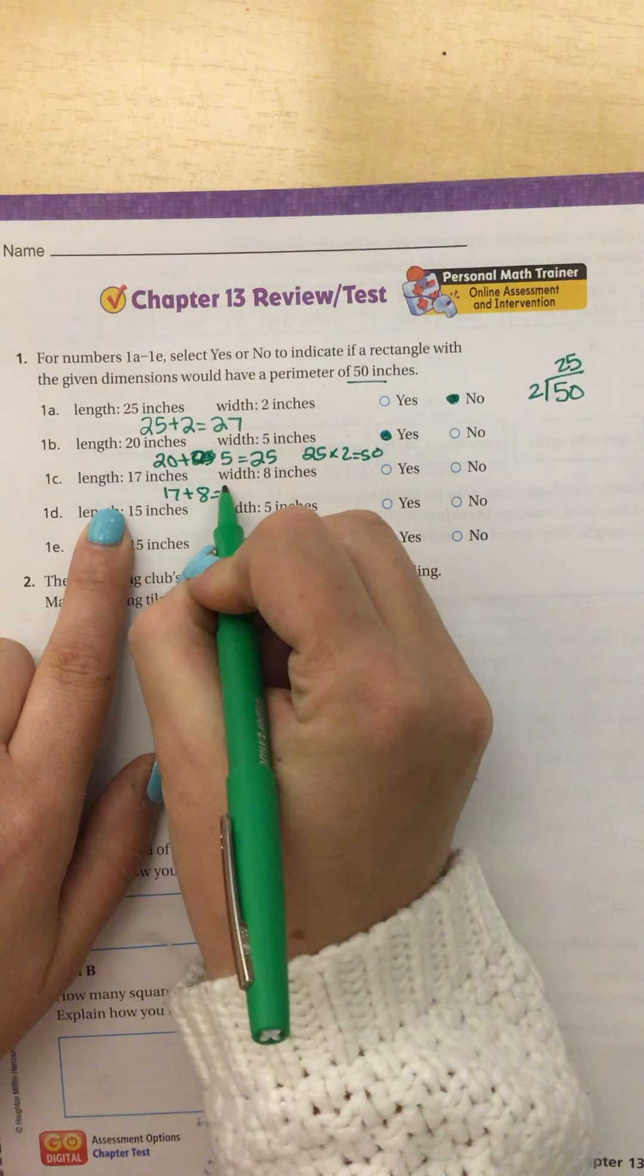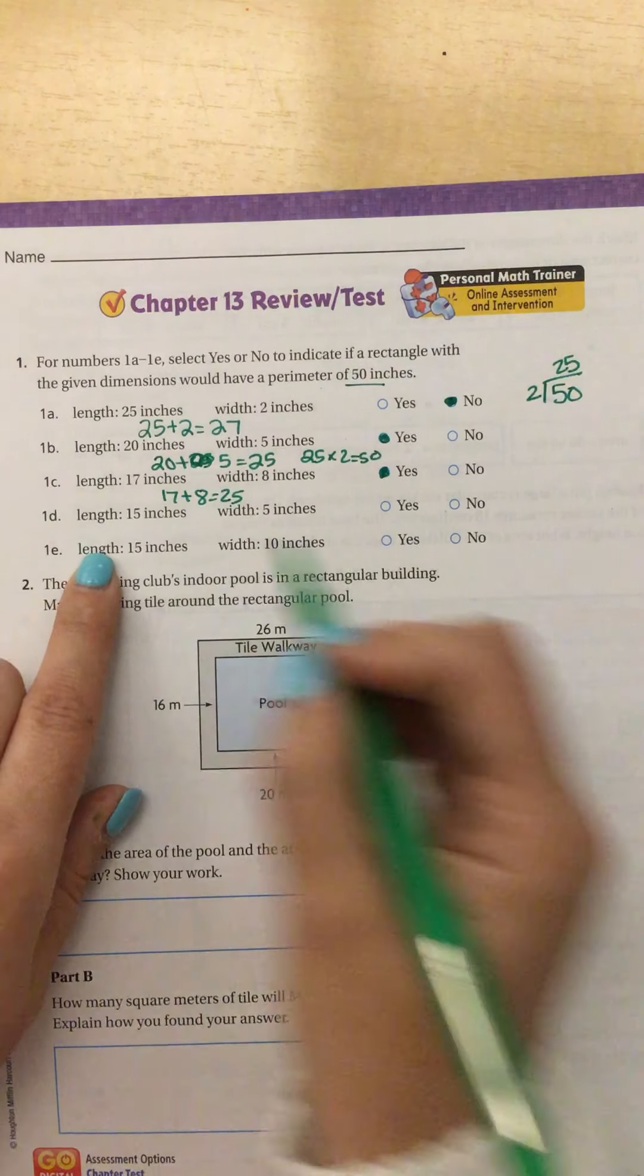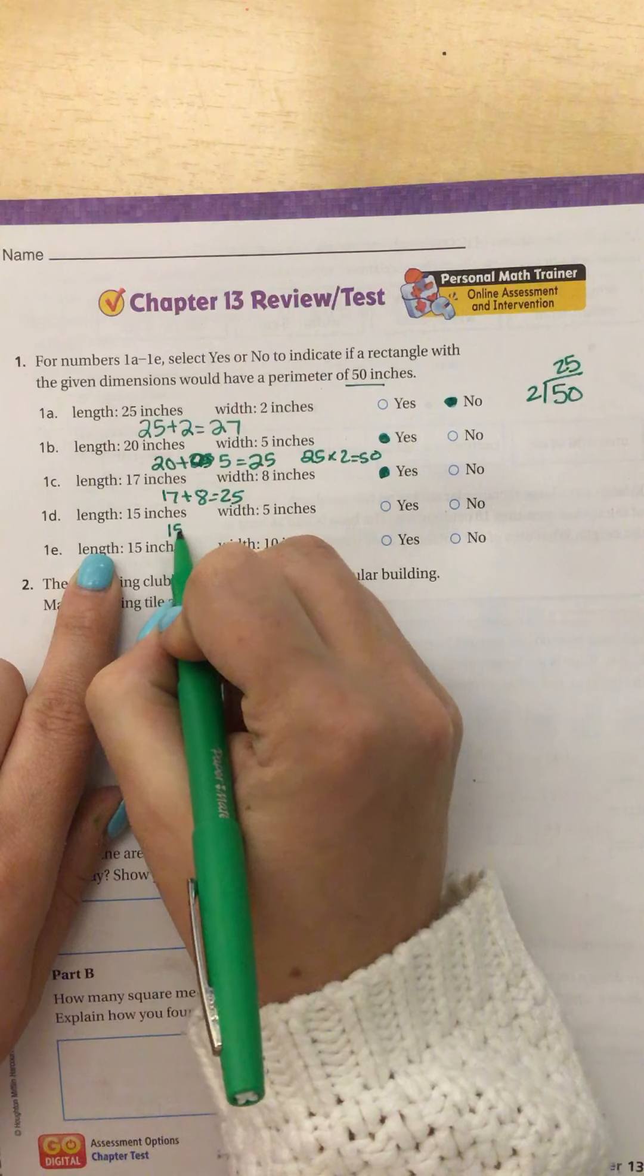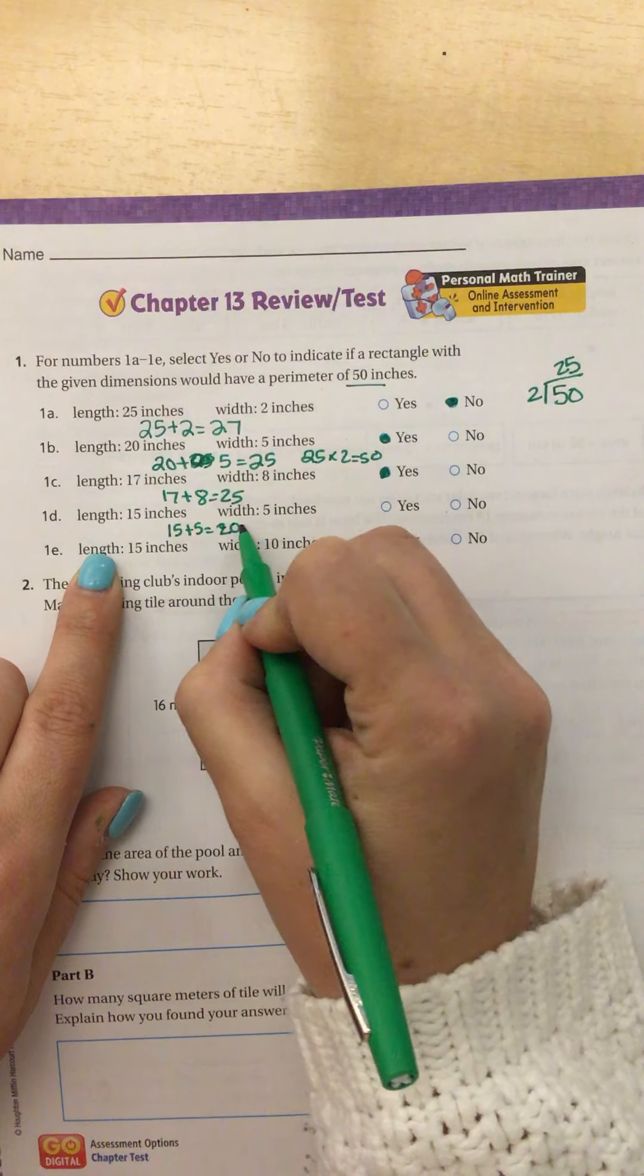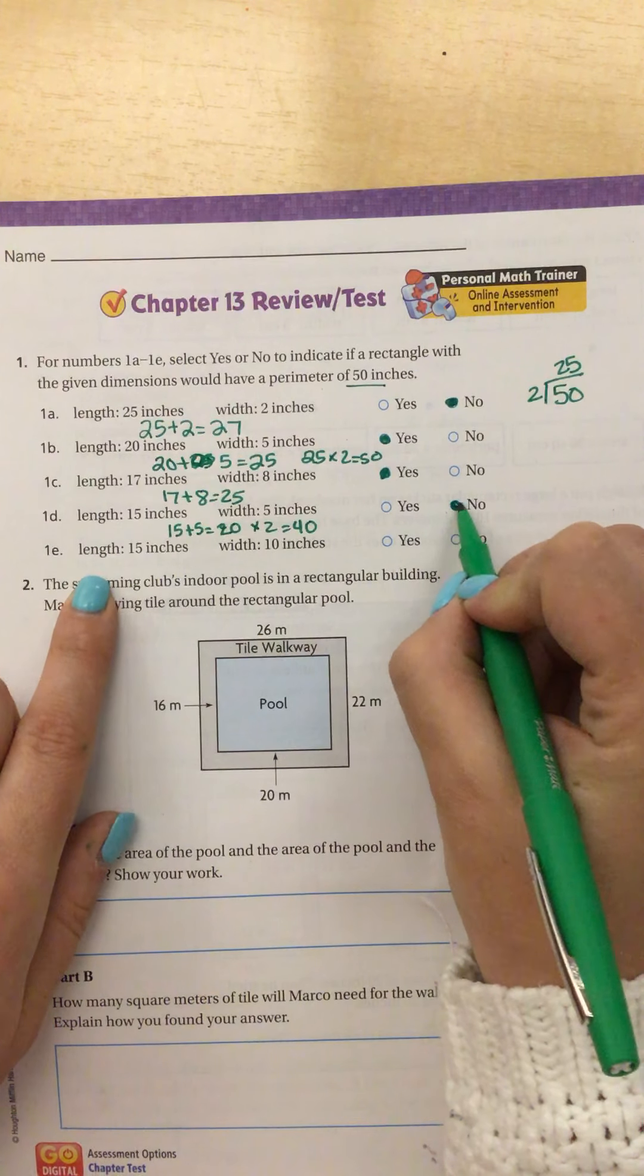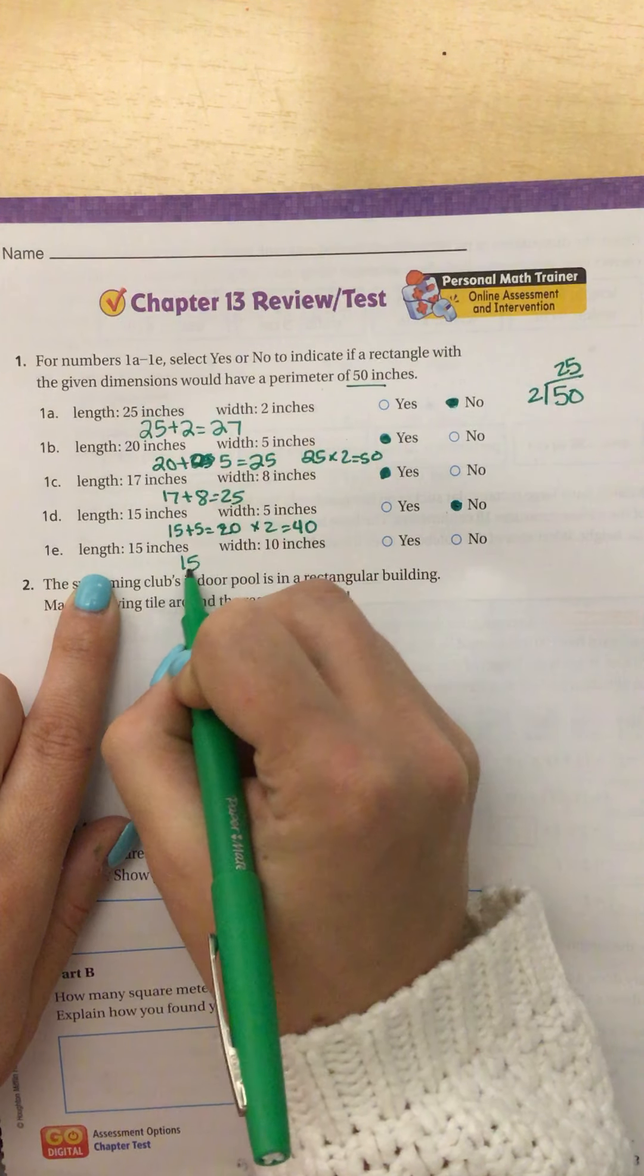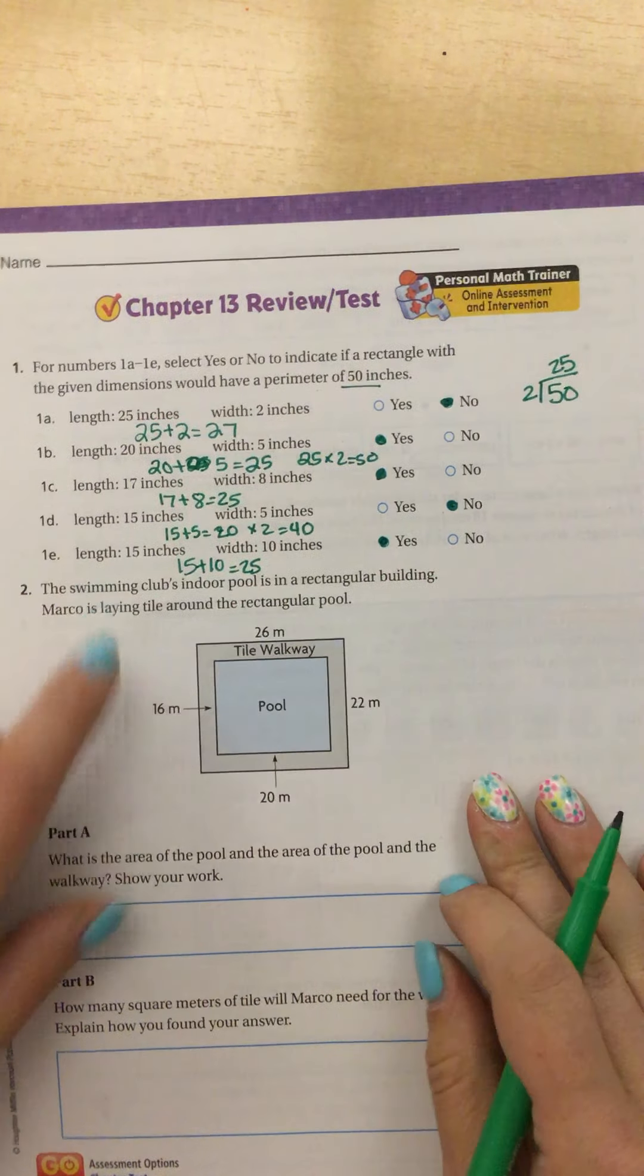20 plus 5 equals 25, and 25 times 2 equals 50. So yes, that would work. 17 plus 8 equals 25, and I know if it adds up to 25 it would work. 15 plus 5 is 20, so that would not work because 20 times 2 is only 40. 15 plus 10 is 25, so I know that would work. 25 times 2 is 50.